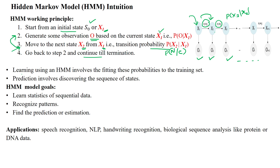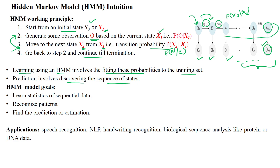Learning using an HMM involves fitting these probabilities to the training data set given the data patterns. It will predict the values of new states by discovering the sequence of states. From these states, the current state predicts the next state, and the hidden states are predicted by using the observations.